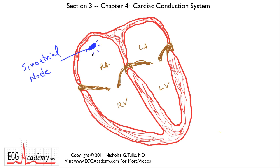The sinus node sends out electrical signals, and these signals spread rapidly across the top chambers of the heart, causing the atria to contract. Now the signal has to get to the bottom chambers somehow. There turns out to be an electrical connection in the middle part of the atrial septum. We refer to this special clump of cells as the atrioventricular node, or AV node.